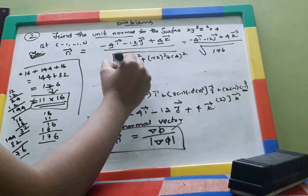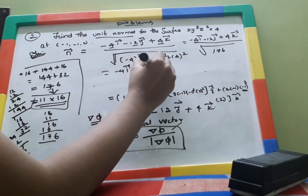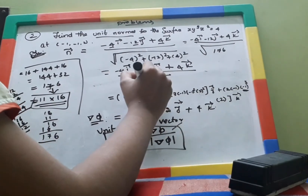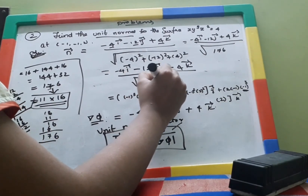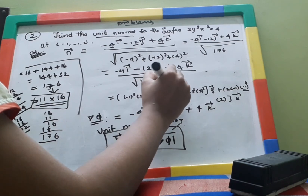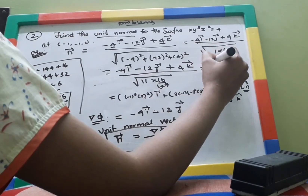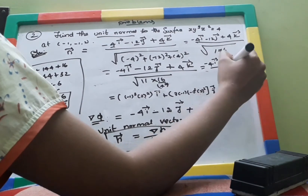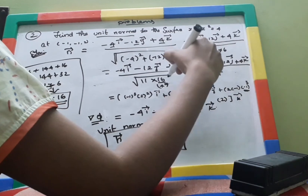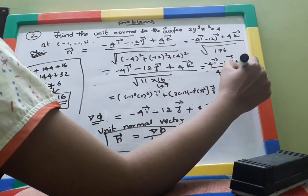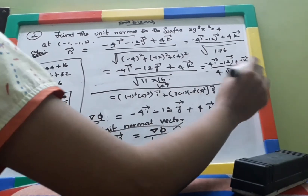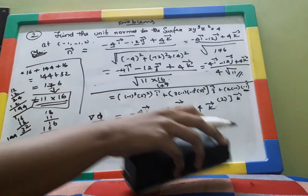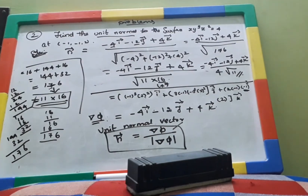Taking the equation (−4î − 12ĵ + 4k̂) / (4√11), we can cancel the factor of 4 from the numerator and denominator to get the final answer: n̂ = (−î − 3ĵ + k̂) / √11. Thank you for watching — subscribe to the channel!